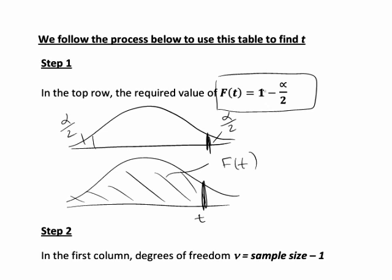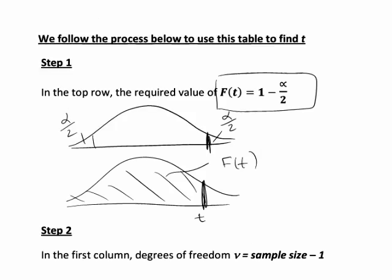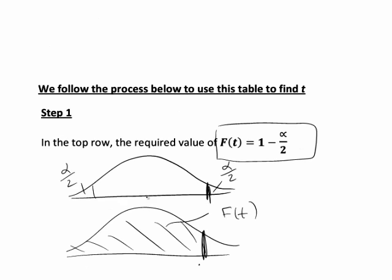Once we know our significance level, we can work that out. The next step is the degrees of freedom, which is the sample size minus one. The corresponding value in the table will then give the magnitude of T. But with it being a two-tailed test, this T distribution is centered at zero, and the value over here will be the negative of that value. So T will be equal to plus or minus the value we get from the table.